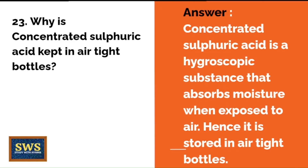Why is concentrated sulfuric acid kept in airtight bottles? Because it is a hygroscopic substance that absorbs moisture when exposed to air; therefore it is stored in airtight bottles.